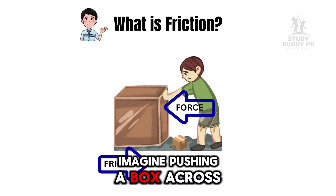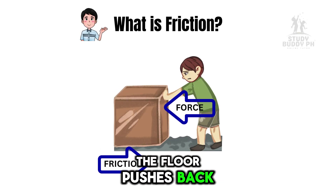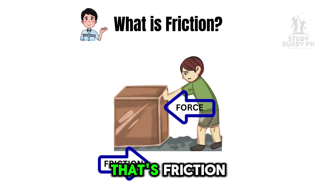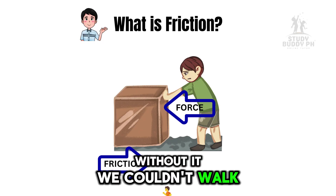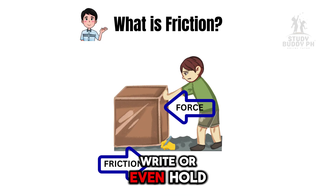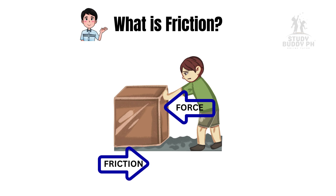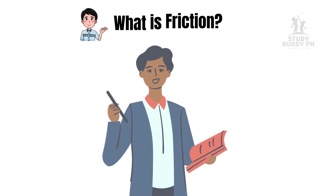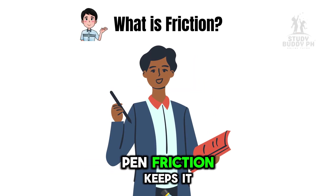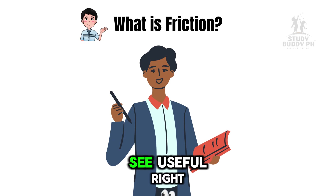Imagine pushing a box across the floor — the floor pushes back. That's friction. Without it, we couldn't walk, write, or even hold things in our hands. When I hold this pen, friction keeps it from slipping. Useful, right?